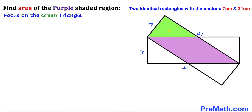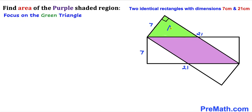Let's focus on this green shaded triangle. Since we are dealing with rectangles, this angle has got to be 90 degrees. So we are dealing with a right triangle, and let's assume that this side length of the green triangle is x centimeters.